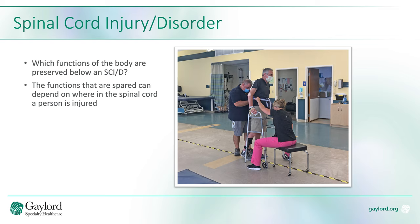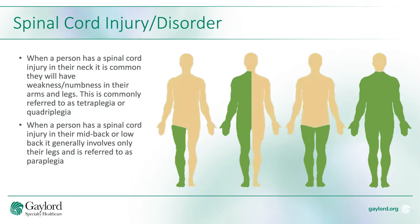When looking at a spinal cord injury or disorder, we start to try to determine which parts of the body are functioning and which parts need to be adapted around. That generally depends on where in your spinal cord you're injured. When a person has an injury in their neck, it is common that they'll have weakness or numbness in the arms and the legs, commonly referred to as tetraplegia or quadriplegia.